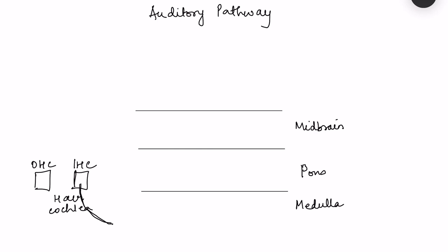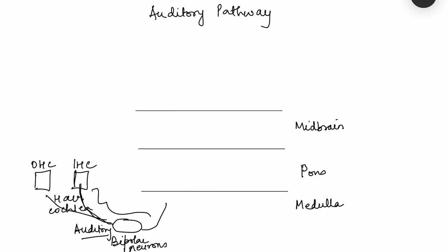The afferents from outer and inner hair cells form the auditory component of the vestibulocochlear nerve. These are the dendrites of bipolar neurons present in the spiral ganglion. These are bipolar neurons because they have a long dendrite process and an axon which goes to the medulla. The spiral ganglion is also present in the cochlea.